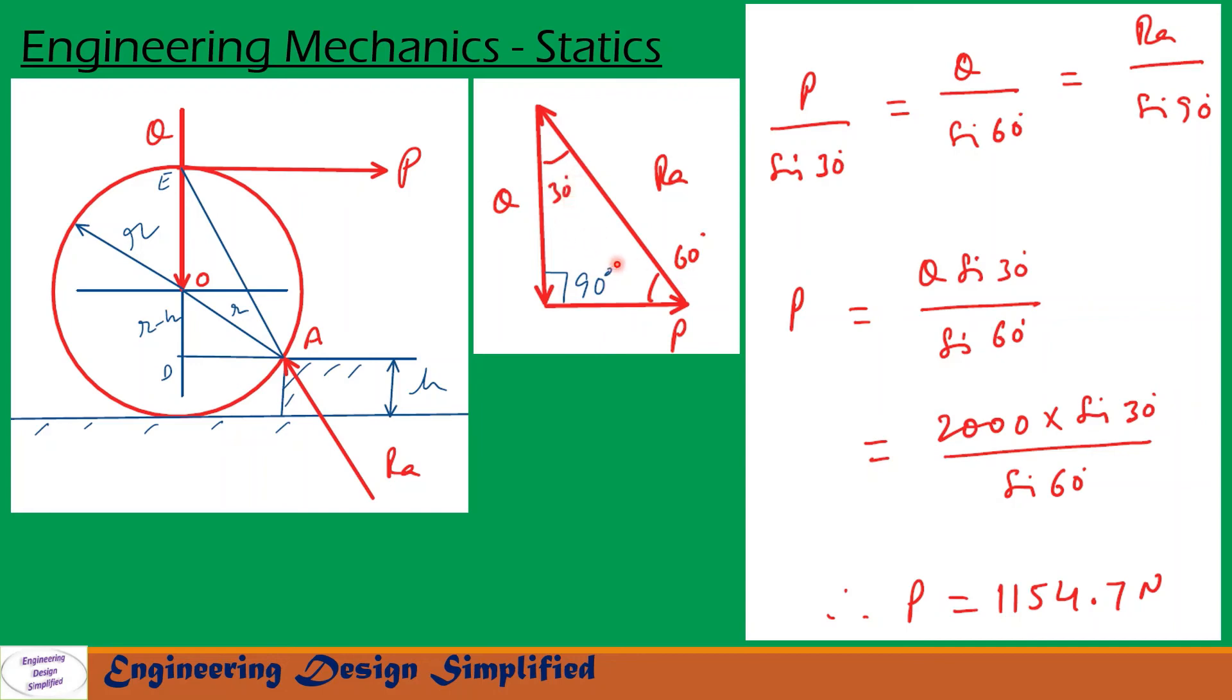Now let us apply the sine rule for this triangle: P/sin 30° = Q/sin 60° = RA/sin 90°. From the first and second terms, we can write P = Q sin 30° / sin 60°. After substituting the values and simplification, we get P = 1154.7 N.